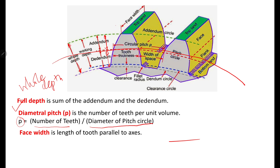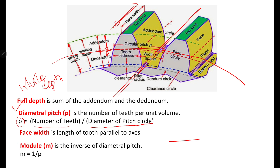Face width is the length of tooth parallel to the axis of the gear. Module is represented by symbol m and is the inverse of diametral pitch — m equals 1 divided by P. This value of small m is called the module.